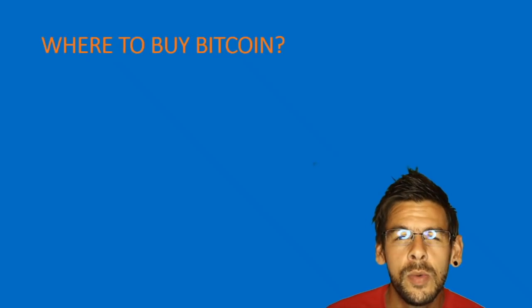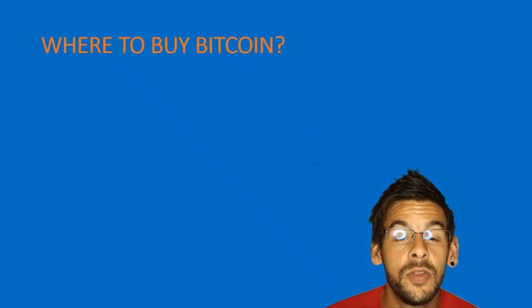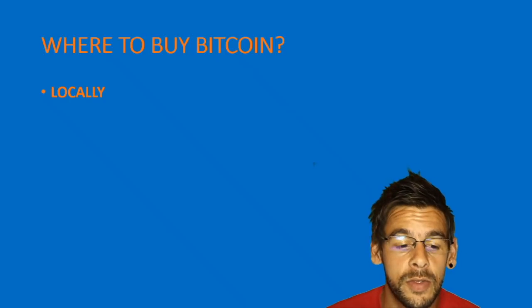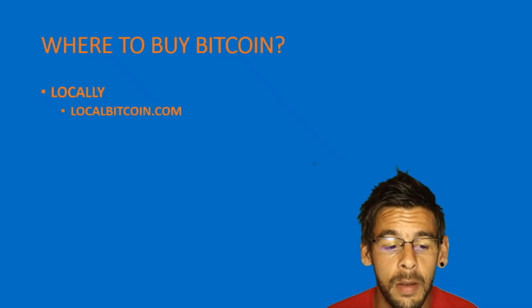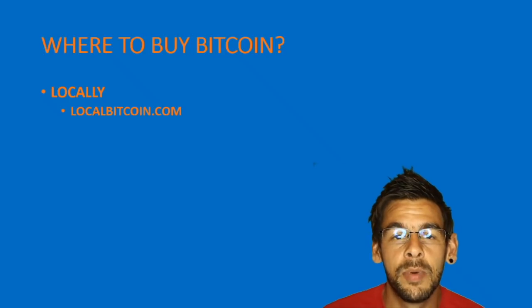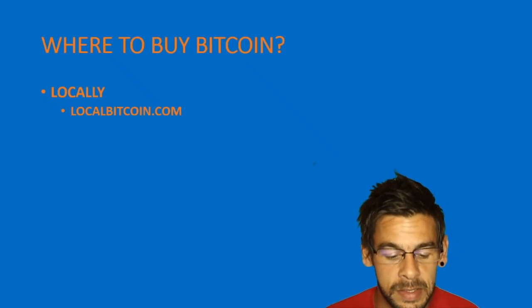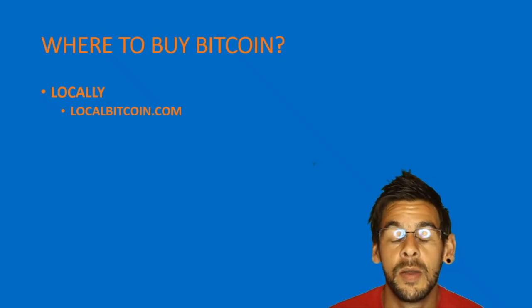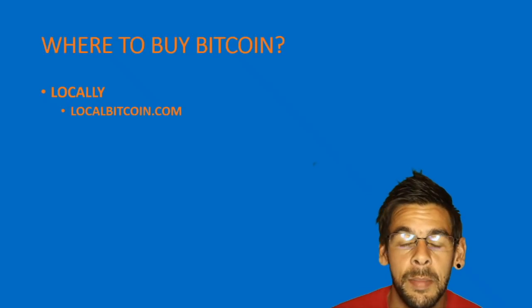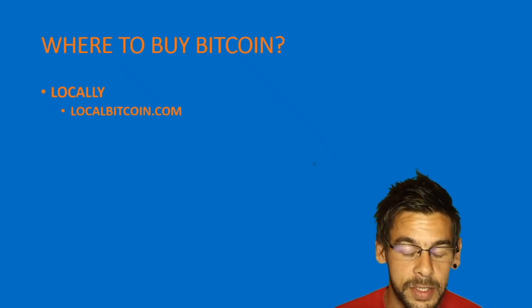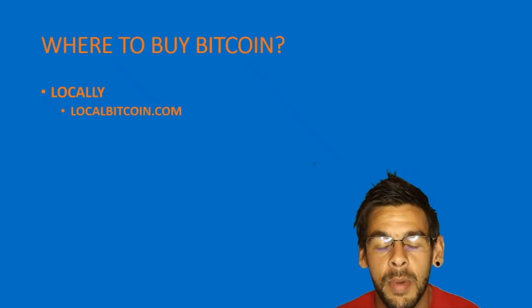There are two main routes to buying Bitcoin. You can buy locally and source deals on websites like LocalBitcoins.com, where people in your area or country will sell their Bitcoin at a slightly different price to what's available at exchanges.